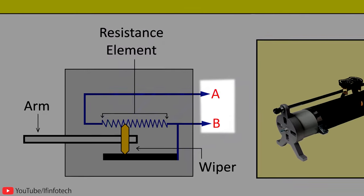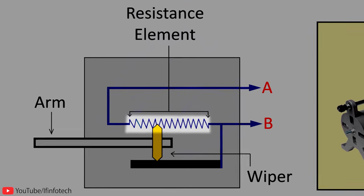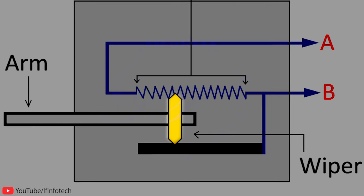It requires an external power source for its operation and consists of a resistance element with a sliding contact. This sliding contact is known as the wiper. The wiper is connected to an arm.